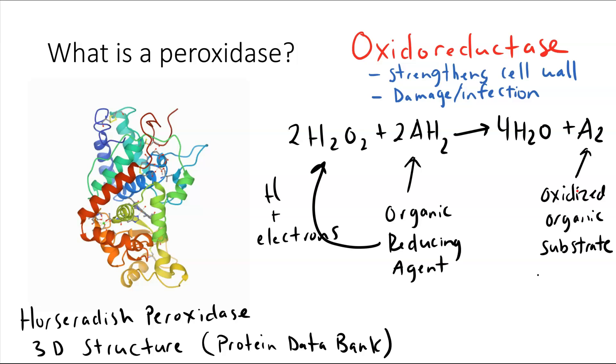My class will investigate the kinetics of a peroxidase enzyme. Generally speaking, this enzyme is an oxidoreductase enzyme, which means that it participates in redox reactions. In the cell, these reactions help to strengthen the cell wall and can play a role in defending against cellular damage and infection.